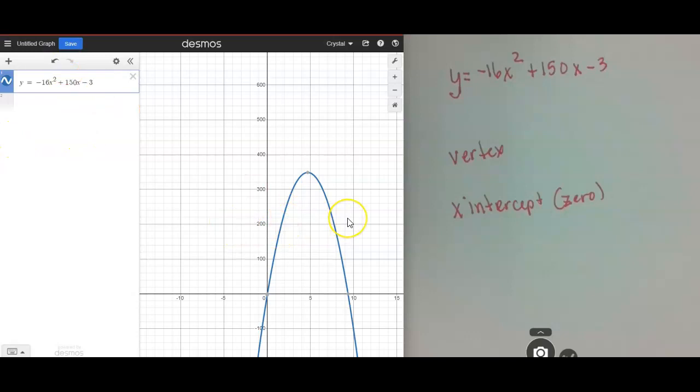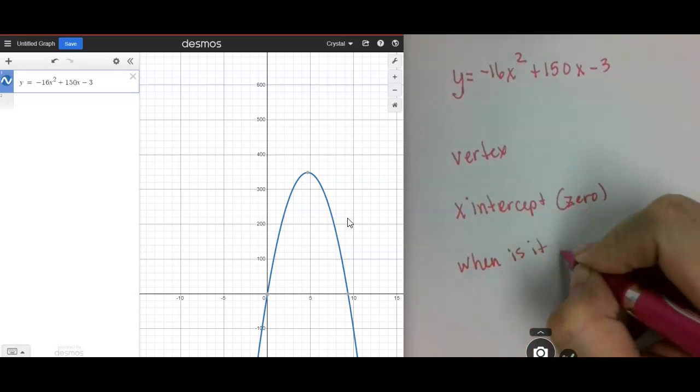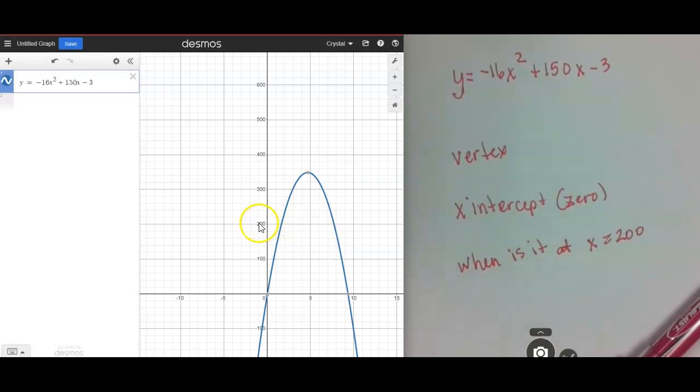If I wanted to find, let's say when is it at Y equals 200. It won't tell me exactly. I could try to get it to stop right there, but that's going to be like a guess. If I just put in Y equals 200 right here,